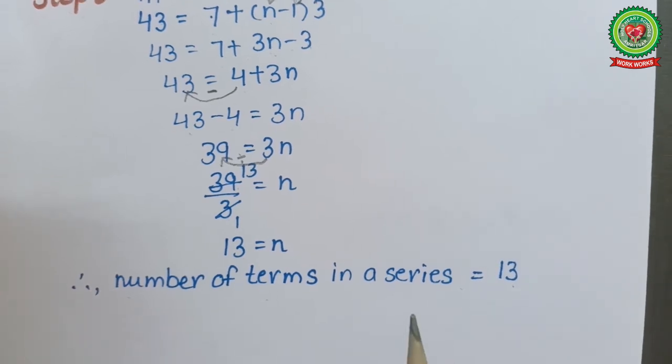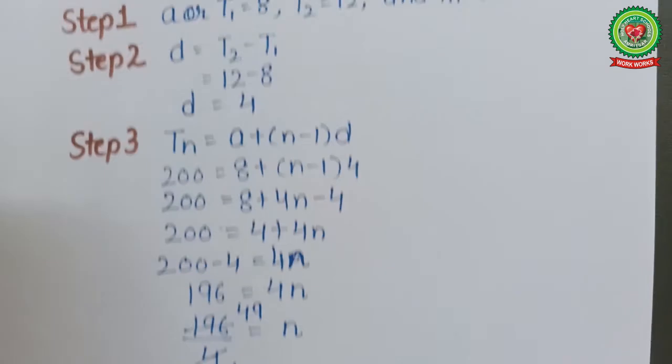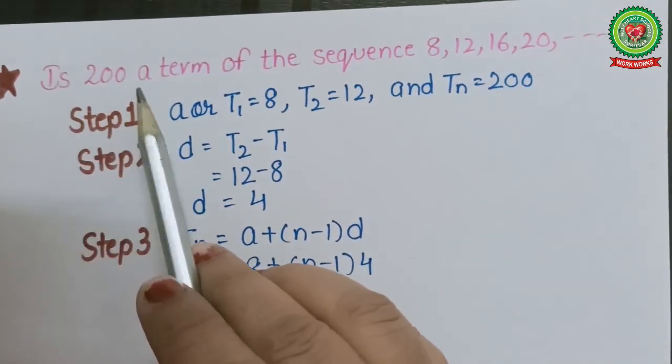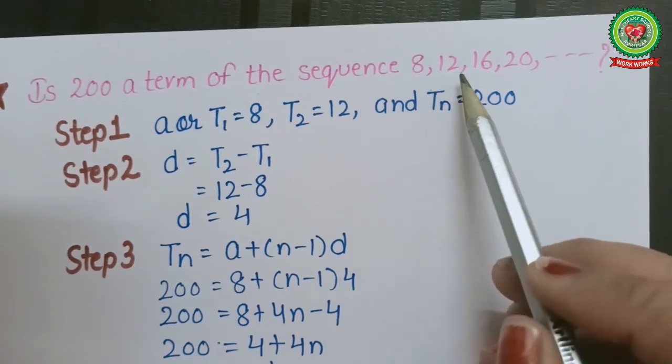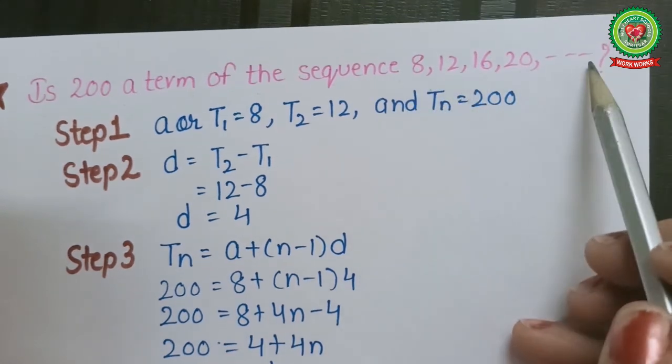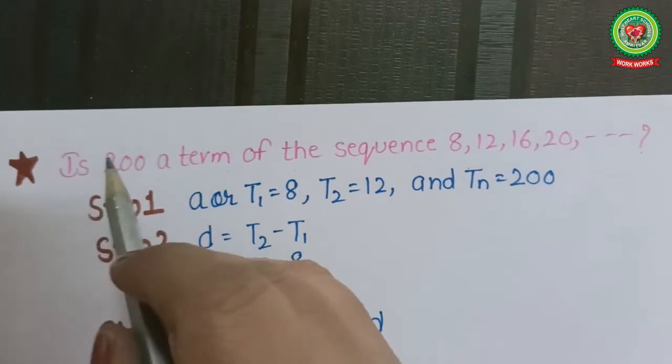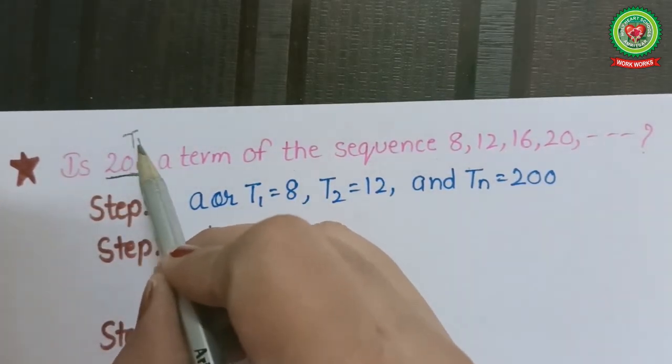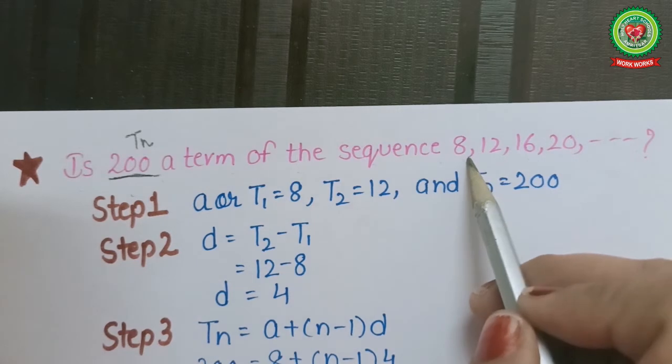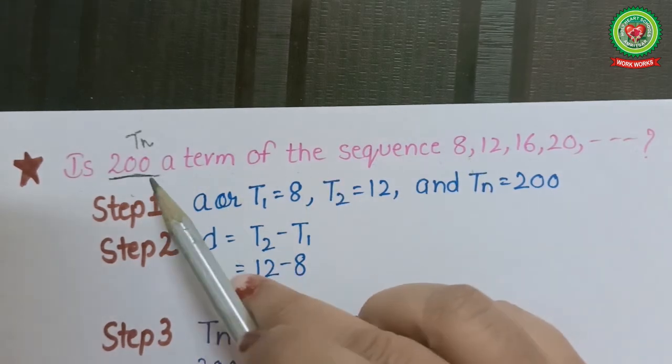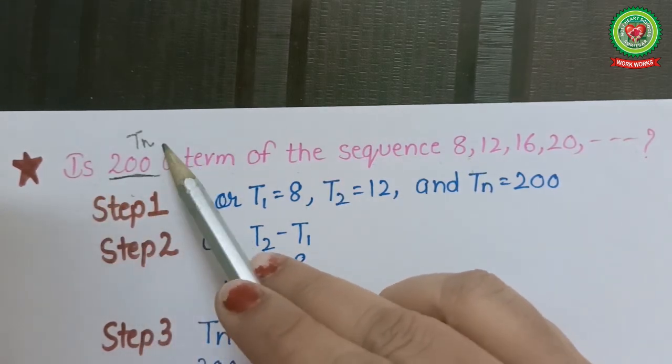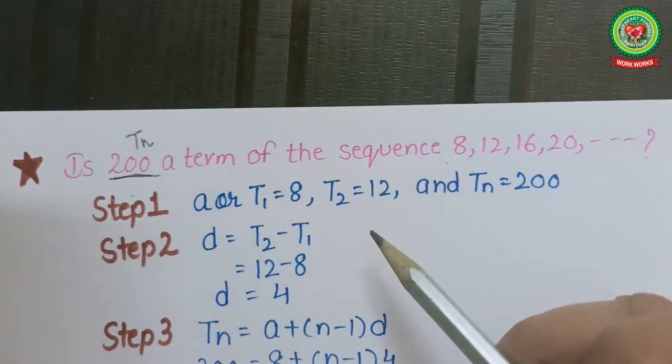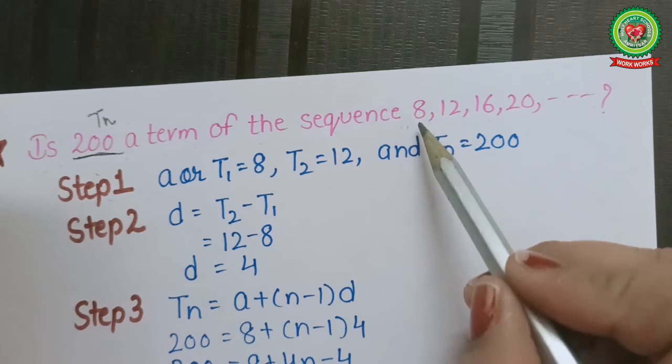Now the next problem is: is 200 a term of the sequence 8, 12, 16, 20, and so on? Here what is given to us: tn = 200 and the sequence. What we have to find is whether it is a term of the sequence or not. We will follow all three steps. Step 1: t1 = 8, t2 = 12, t3 = 16, and tn = 200.